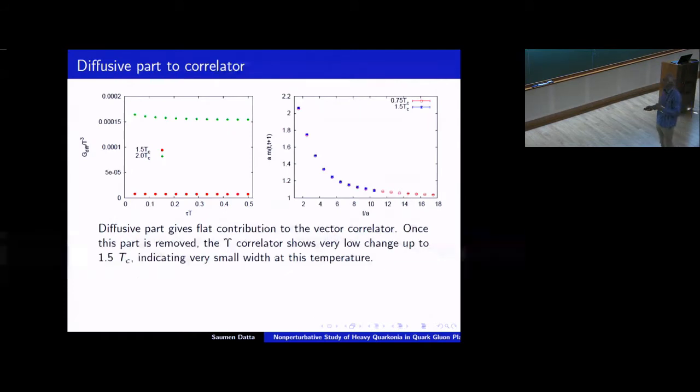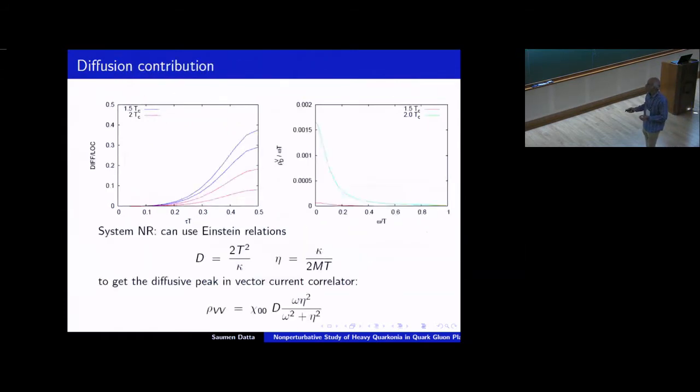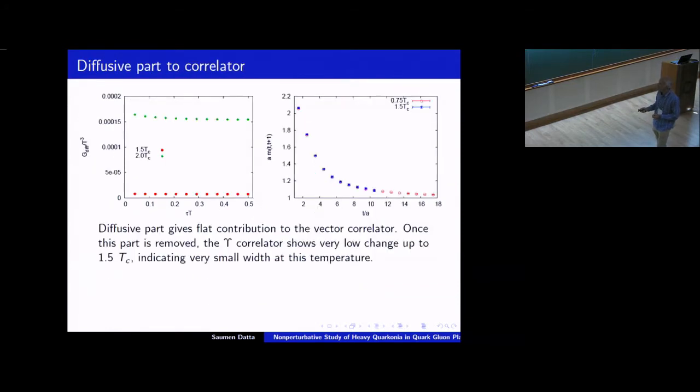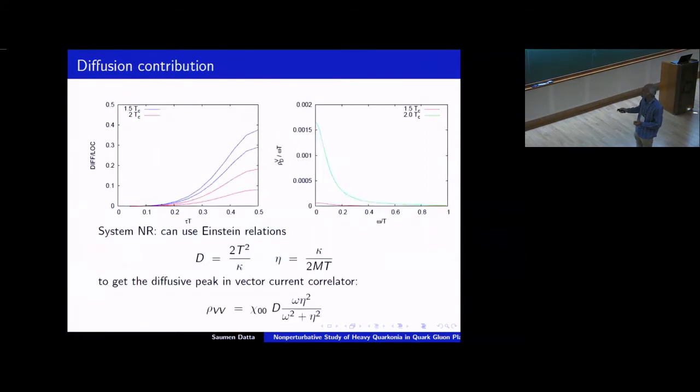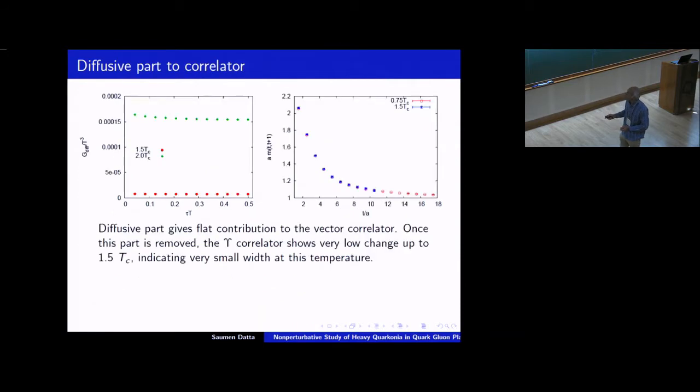Okay. So this is the 1.5 Tc number and this is the 2 Tc number. Okay. What is the contribution of, what would be the contribution of such a structure? You just take this structure to the bottomonium correlator.